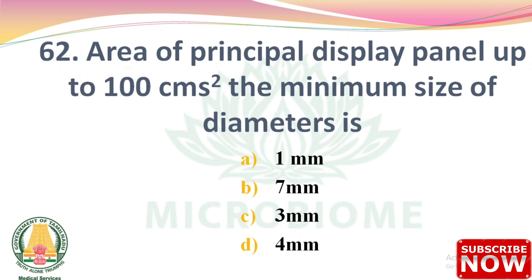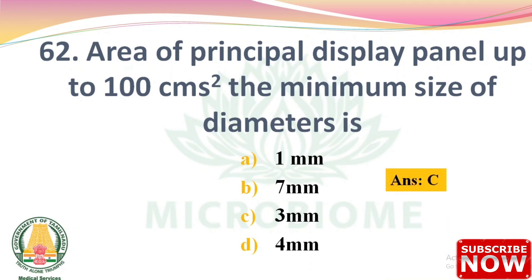Next question: for an area of principal display panel up to 100 cm square, the minimum size of diameter is — options: 1 mm, 7 mm, 3 mm, 4 mm. The right answer is Option C: 3 mm.